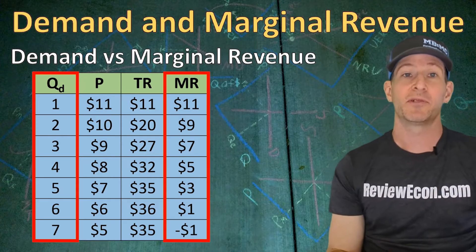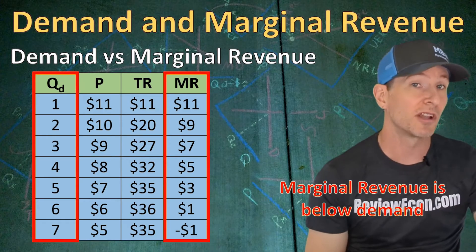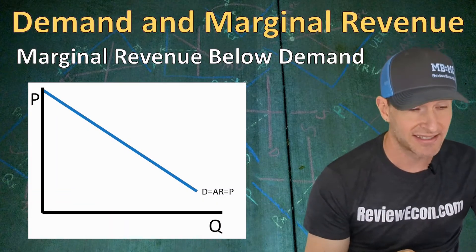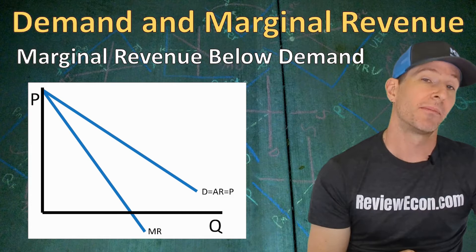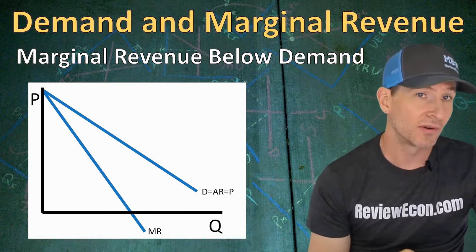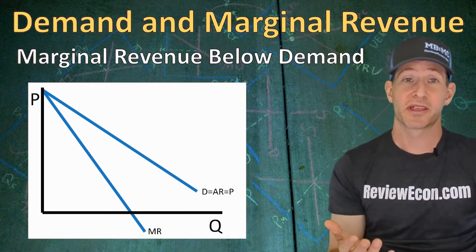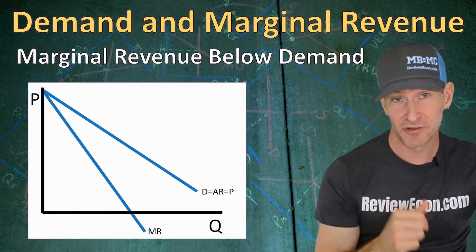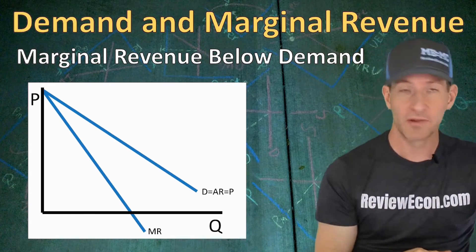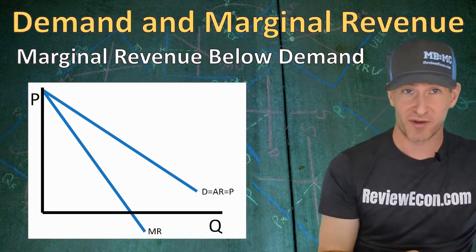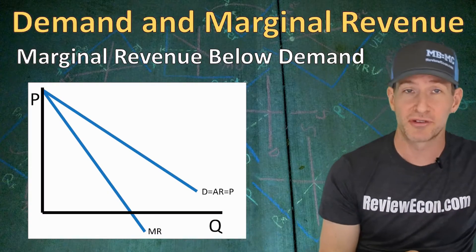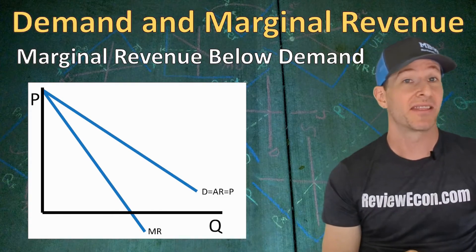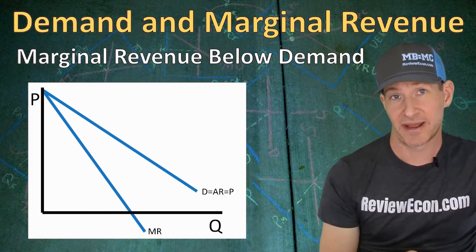Just like a monopoly, we graph the marginal revenue below the demand curve. The demand curve is also our average revenue and price. You can determine the elasticity of the demand curve through the value of the marginal revenue: when marginal revenue is positive, the demand curve is elastic; where marginal revenue is zero, that is the unit elastic point on the demand curve above; and when marginal revenue is negative, that is the inelastic range of the demand curve above.